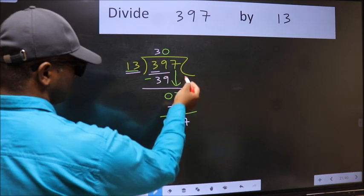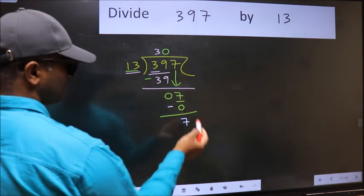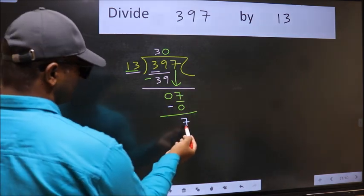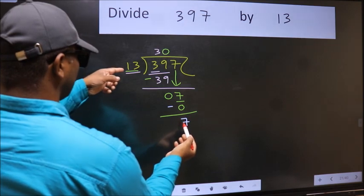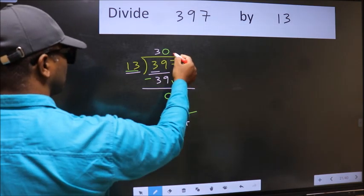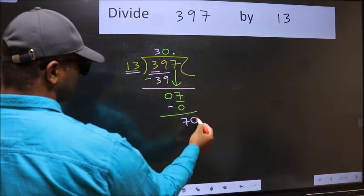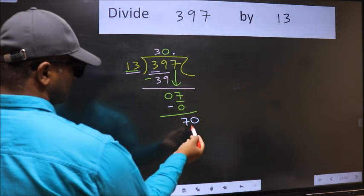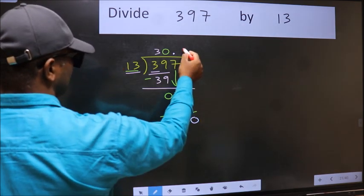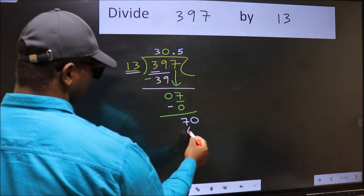Over here, we did not bring any number down, and 7 is smaller than 13. So now we can put dot and take 0. So 70. A number close to 70 in 13 table is 13 times 5, 65.